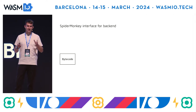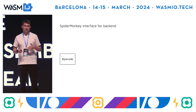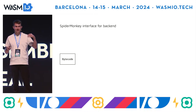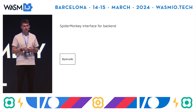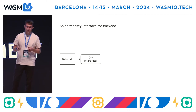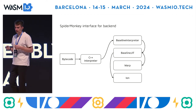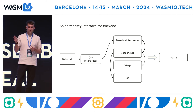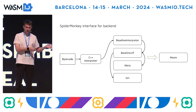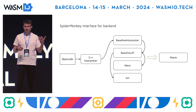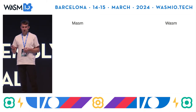Let's look at the internal picture of SpiderMonkey. When you run your source JavaScript with SpiderMonkey, first of all it compiles it to bytecode, then it goes to a C++ interpreter, and then you have four JIT tiers for execution. All these tiers use one abstraction called the macro assembler, and from this macro assembler it generates bytes or assembly for execution.